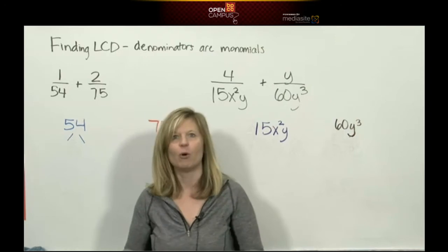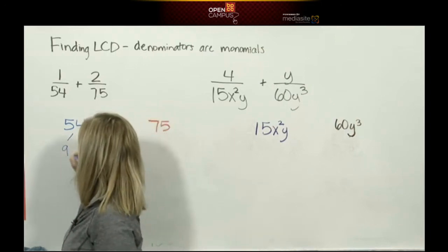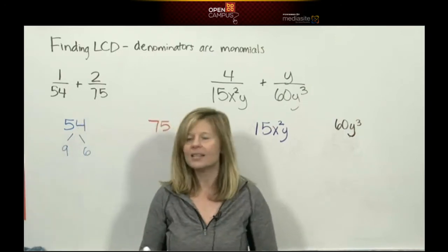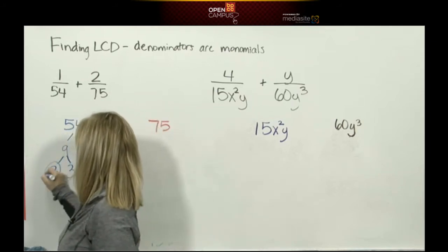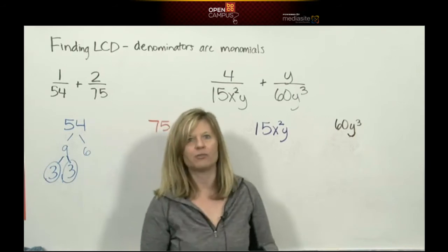Off the top of my head it's 9 times 6. 9 and 6 are not prime. 9 is 3 times 3—these are prime numbers, I circle them, I'm done with that part of the tree. 6 is 2 times 3.